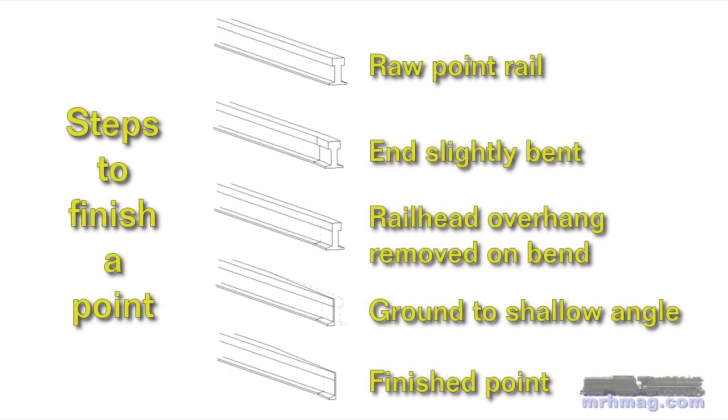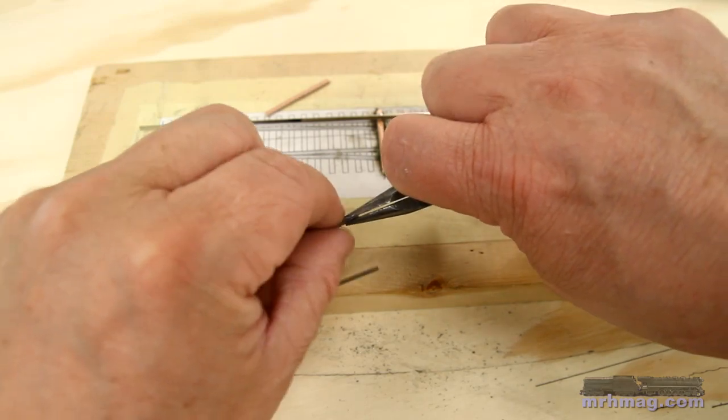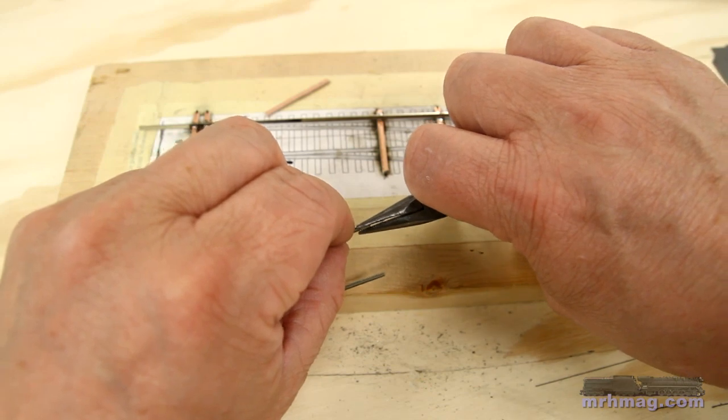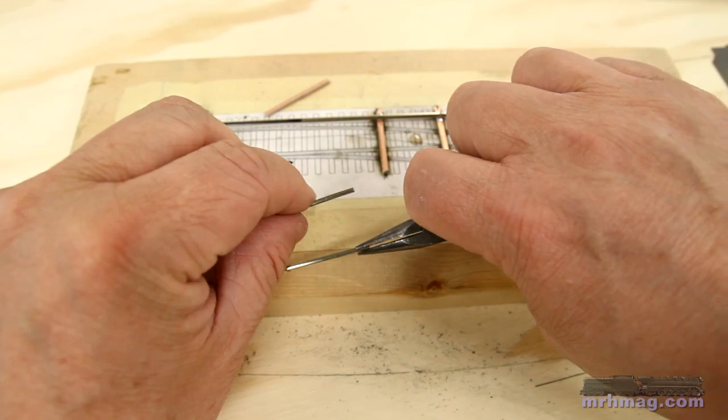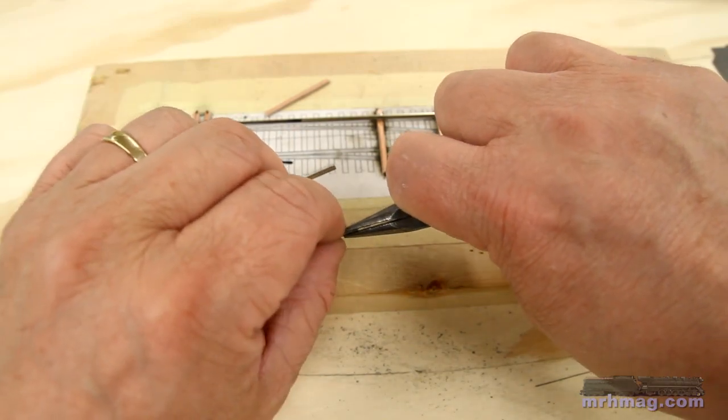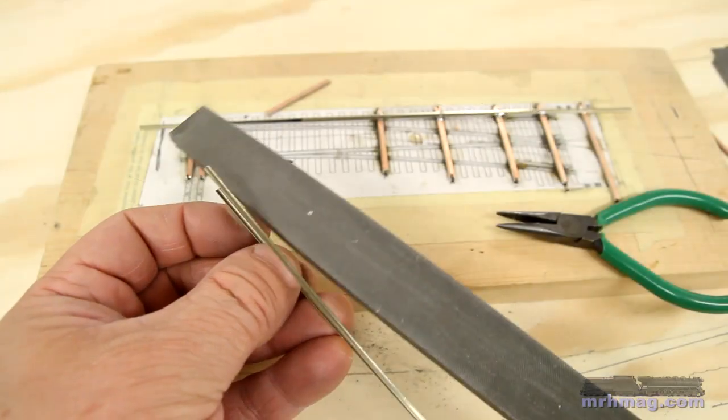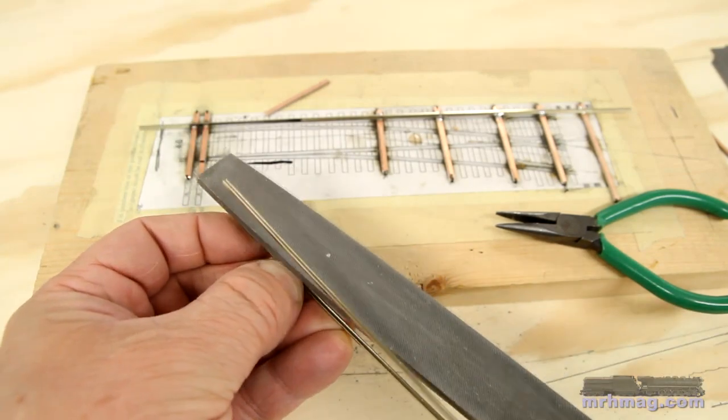Preparing the points is a multi-step process. Make a slight bend in the last three eighths of an inch of the point. It should only bend as far as the overhang of the railhead over the rail's web. File away the overhanging railhead. The railhead's inner edge should be straight and the bend removed.